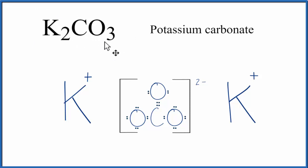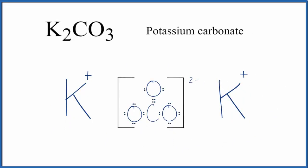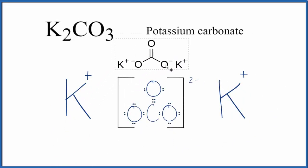So this is the Lewis structure for K2CO3 potassium carbonate. Potassium carbonate is an ionic compound, and it's made up of an array of these repeating formula units, right here, just like this. Note that we could also write this structure like this here. In this case, we still have our double bond and our positive potassiums, and you can see that these two negative charges reside on the single bonded oxygen.